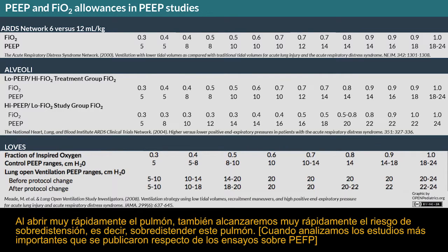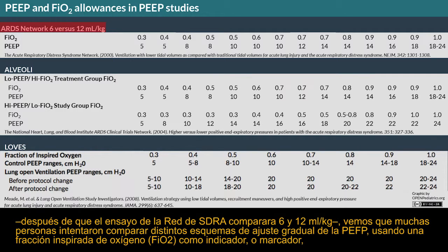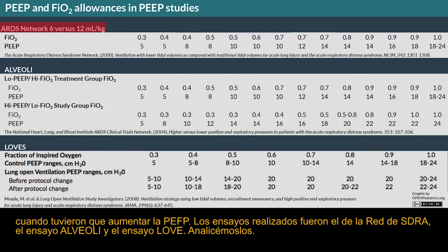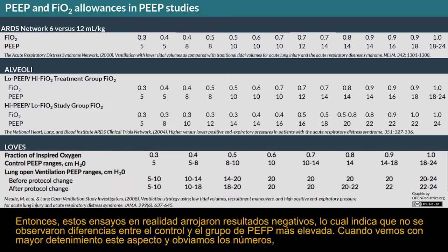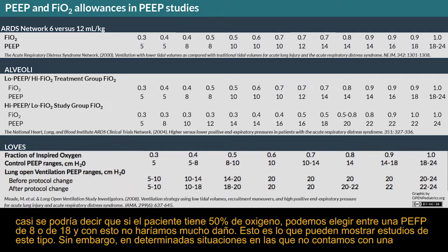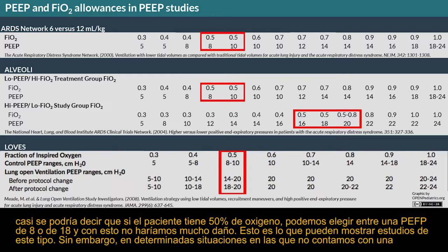When we look at the major studies published in terms of PEEP trials—after the ARDS network trial comparing 6 versus 12 mL per kilo—several groups tried to compare different PEEP titration schemes, using FiO2 as an indicator or marker for when to increase PEEP. There was the ARDS network trial, the ALVOLA trial, and the LAFS trial. All these trials ended with negative results, meaning no difference between the control and higher PEEP group. You could almost say: if your patient is on 50% oxygen, you can choose either a PEEP of 8 or 18 and not do much harm.